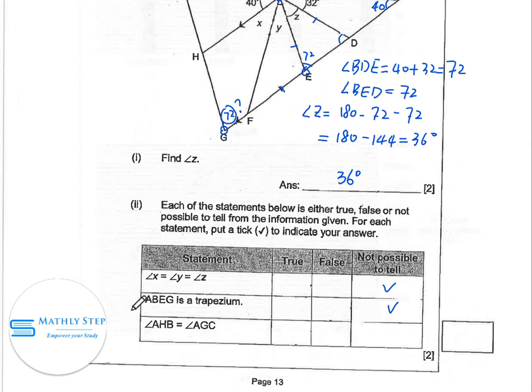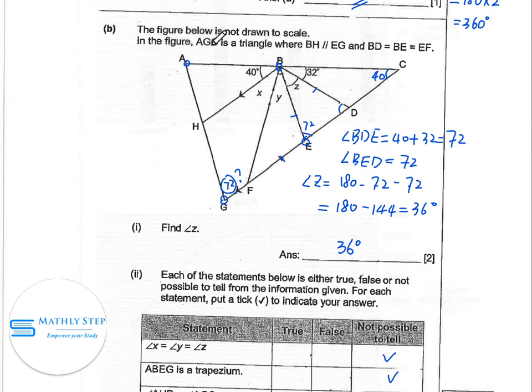Next, AHB and angle AGC are the same. AHB is this angle. Angle AGC is this angle.